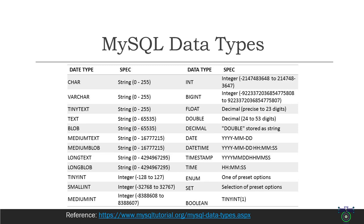The int data type can store values from approximately -2 billion to +2 billion and takes up four bytes of storage. The big int data type can store very large values and takes up eight bytes of storage. The storage size of the floating point data type depends on the precision of the values stored.